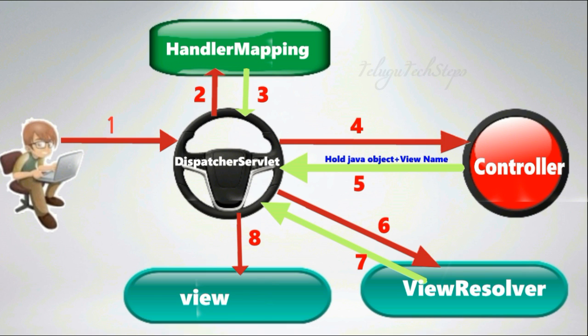The particular data from the Java object is retrieved, and the HTML format becomes visible. You can use JSP or HTML to view it. Finally, the response is sent back to the client. This is the exact process of Spring MVC.